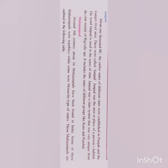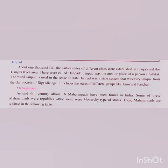The 16 Mahajanapadas are shown in the above table. Anga was one of the earliest of all Mahajanapadas. It was located around the Gangetic Plains, and this state was named by various names in the Atharva Veda.